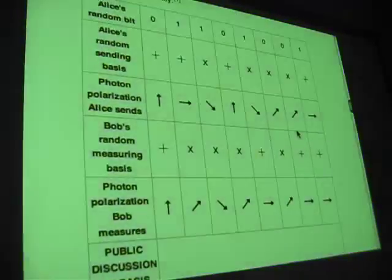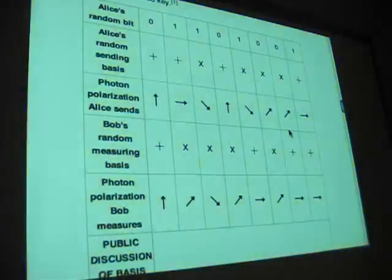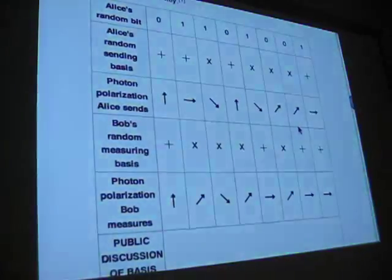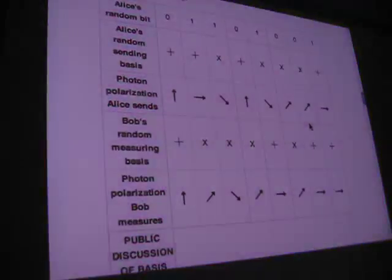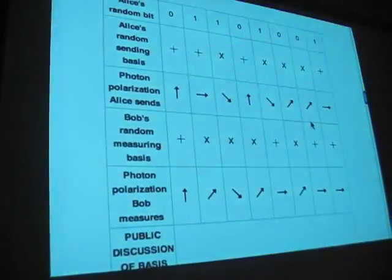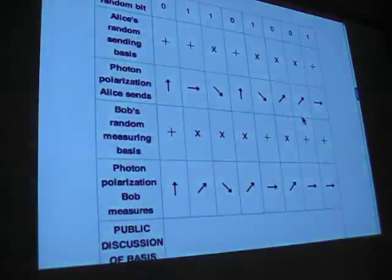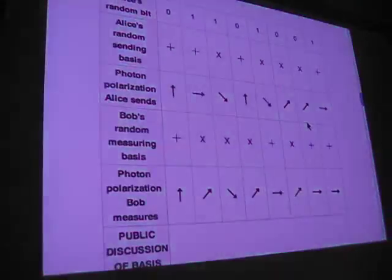The way this works is Alice is sending bits to Bob. Alice sends bits 0, 1, and what she does is she encodes a positive north as a 0, or horizontal as a 1, and the same thing with the diagonal spins. You do one way is a 1, one way is a 0.